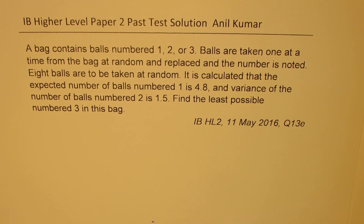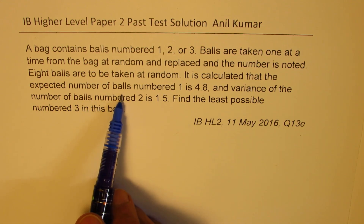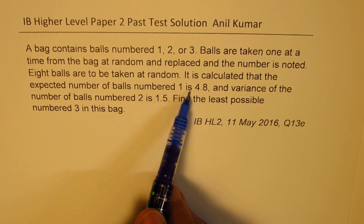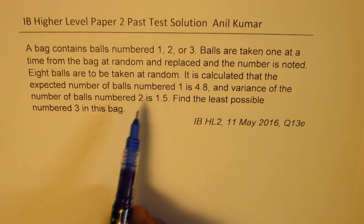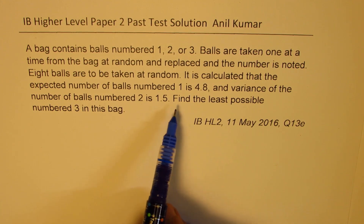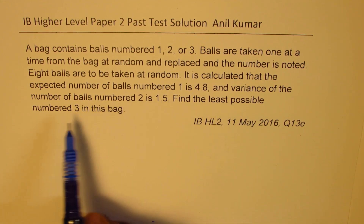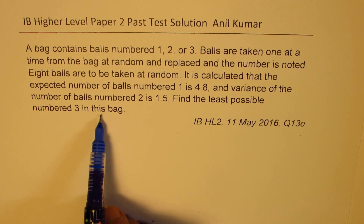The question is: a bag contains balls numbered 1, 2, or 3. Balls are taken one at a time from the bag at random and replaced, and the number is noted. Eight balls are to be taken at random. It is calculated that the expected number of balls numbered 1 is 4.8 and the variance of the number of balls numbered 2 is 1.5. Find the least possible number of balls numbered 3 in this bag.